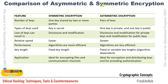Comparing symmetric and asymmetric encryption: symmetric uses one key shared by two or more parties, while asymmetric uses a key pair. Loss of a symmetric key can result in disclosure and modification, which is not a problem with asymmetric. Symmetric is faster and more performance-efficient; asymmetric is comparatively slower. Symmetric has a fixed key length; asymmetric key length can vary. Symmetric is ideal for encrypting files and communication channels; asymmetric is ideal for distributing keys and providing authentication.